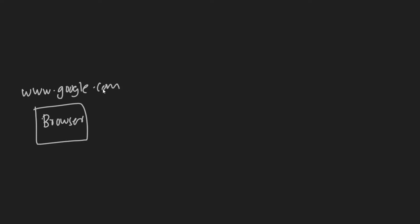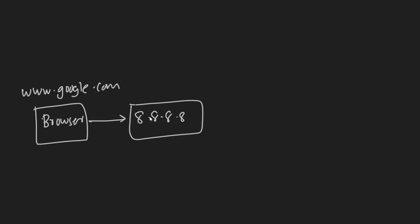Here is how it works. Let's say your web browser is the DNS client and you are trying to access www.google.com. The first request goes to the DNS recursive resolver — let's say 8.8.8.8. The browser is asking: can you give me the IP address of www.google.com? What the recursor does is it first checks its cache to see if this domain has been resolved already. If it has, it takes that from the cache and gives it back to the browser.